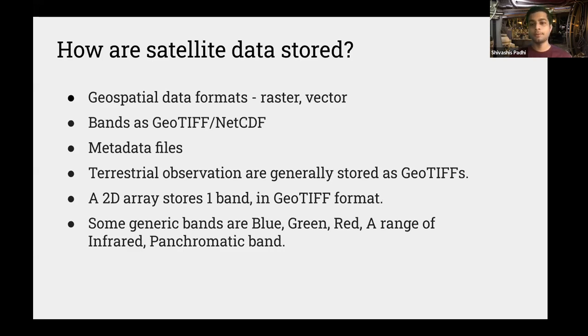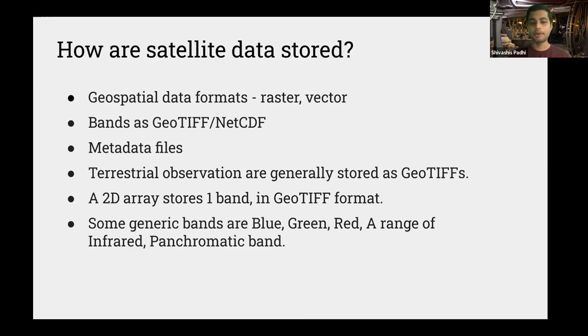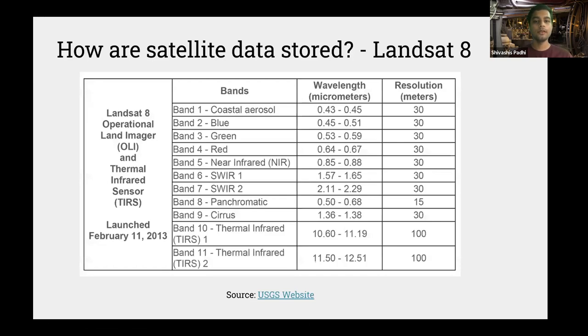After that, we store the metadata of the satellite imagery. For example, what was the angle of inclination when a satellite took a photograph or recorded some data. And when they did capture it. Like I told you, 2D arrays are stored in one band, which is generally in GeoTiff format. Some general bands are blue, green, red, a range of infrared like we saw in Landsat. And then there is a panchromatic band. Panchromatic band is used to enhance the resolution, but we'll talk about it in a bit more detailed fashion later on.